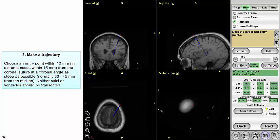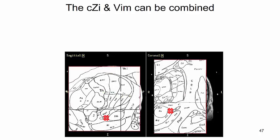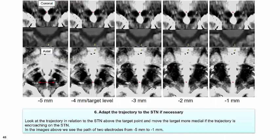For the trajectory, choose an entry point within 10 mm from the coronal suture at an angle as steep as possible, without transecting sulci or ventricles. It is possible to combine a trajectory for the VIM and the calozona inserta in about 9 out of 10 patients; in 1 out of 10, a good trajectory through both targets is not achievable. In those patients, it is wise to ignore atlas coordinates for the VIM, because the cerebelothalamic fibers are more accurately predicted by the nearby STN and red nucleus than by the distant commissures.